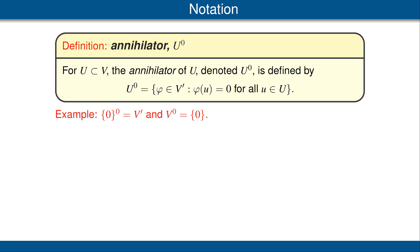Let's look at some examples. For a first example, the annihilator of the subspace consisting of just 0 is the whole vector space V prime. This is because for every phi in the dual of V, phi of 0 is equal to 0. Our next example states that the annihilator of the entire vector space V is just the linear functional 0, because the only linear functional that is 0 on all of V is the 0 linear functional.